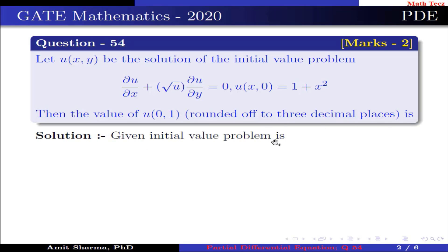Given initial value problem is 1·∂u/∂x + √u ∂u/∂y = 0. Here p is 1, q is √u, and r is 0.